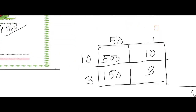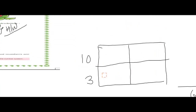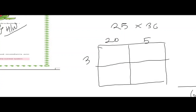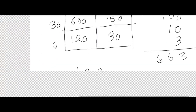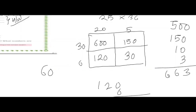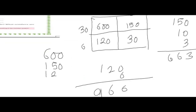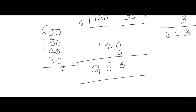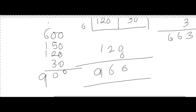Next, 25 into 36. Divide into 20 plus 5 and 30 plus 6. So 30 times 20 is 600, 30 times 5 is 150, 6 times 20 is 120, 6 times 5 is 30. Now add all four numbers: 600 plus 150 plus 120 plus 30. That gives us 900.